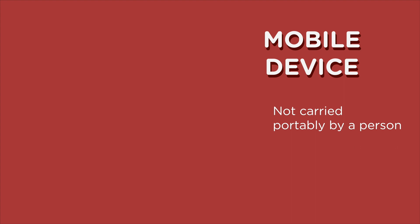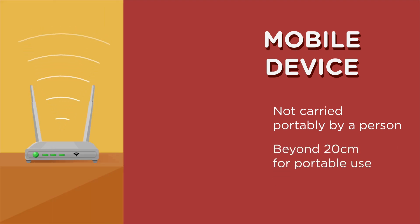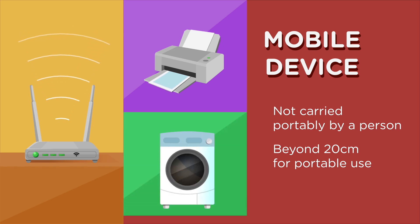While a mobile product is something not typically carried portably by a person. For example, a Wi-Fi router at home, a smart printer, or a smart laundry machine.